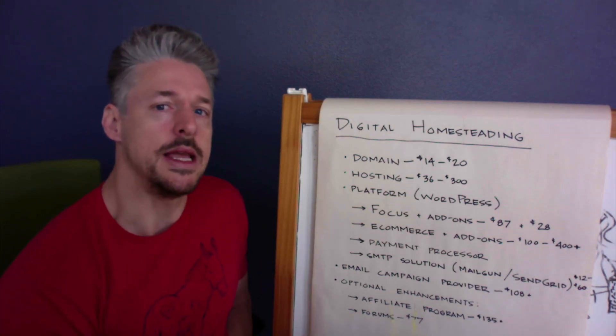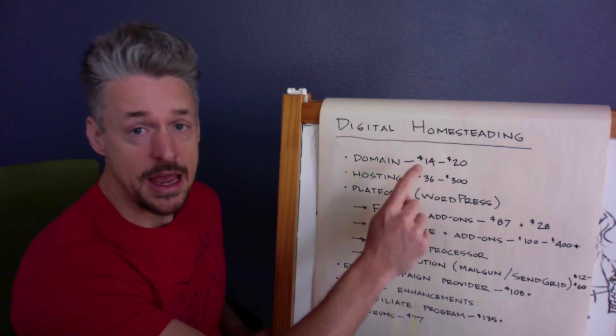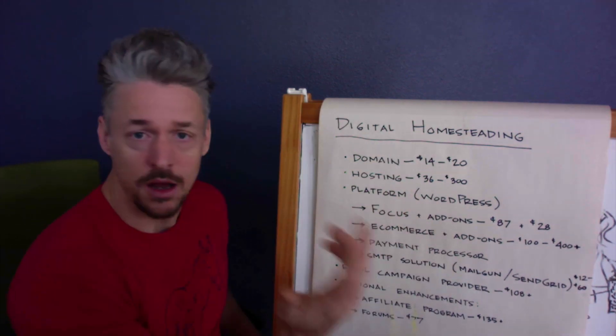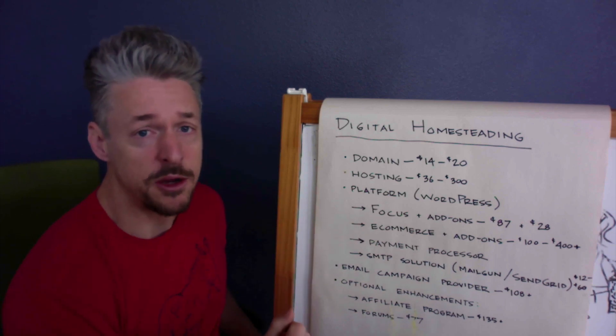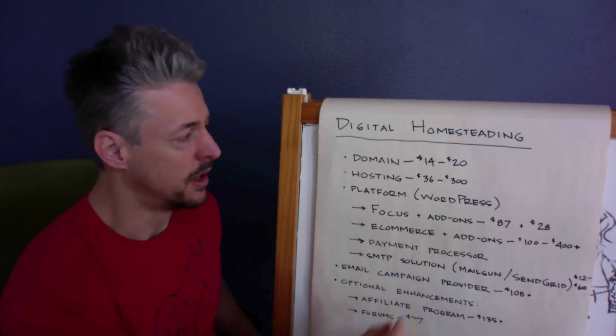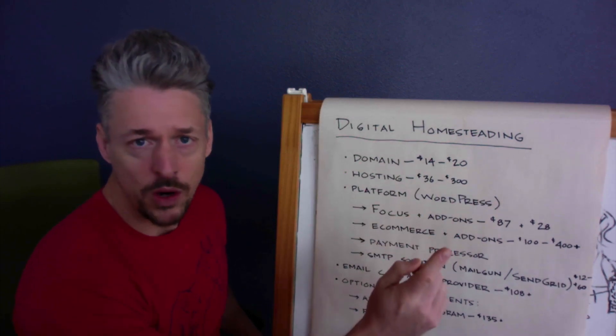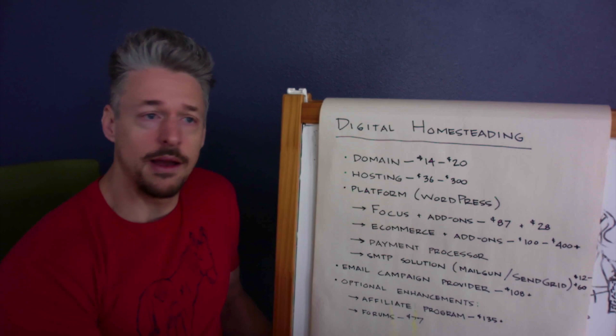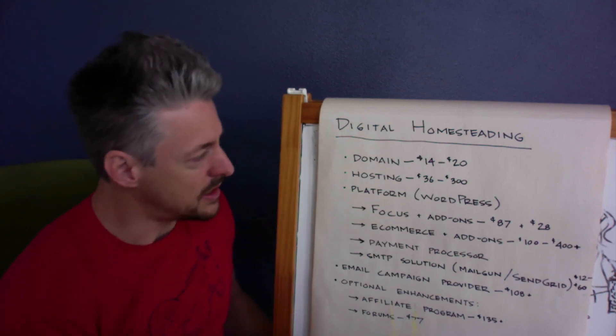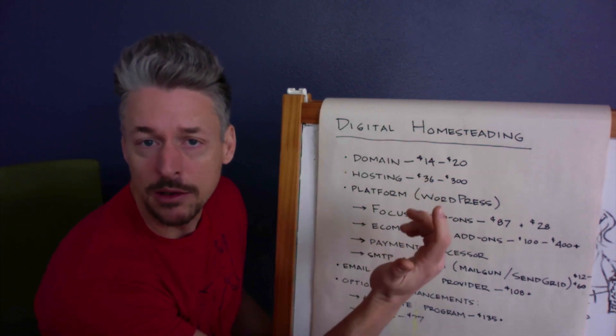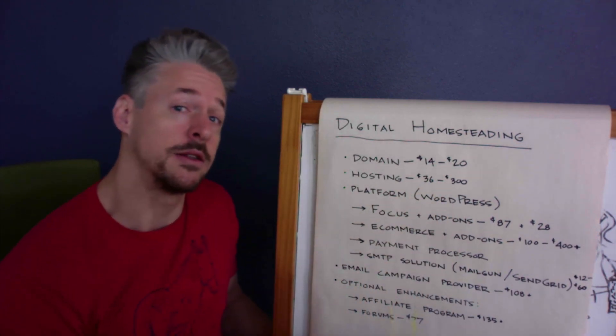So the first thing we're going to need for any website is a domain. Depending on where you register your domain at Namecheap, you can get a domain for about $14 per year or at GoDaddy, their standard costs about $20 per year. So your domain is going to be $14 to $20 right there. The next thing you're going to need is hosting. Website hosting comes in a huge array of pricing and all kinds of options. You've got your most basic shared hosting at a company like Bluehost, it's going to cost you about $36 a year.